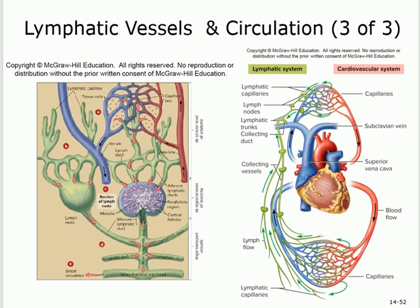The lymph flows from blind-ended pocket-shaped capillaries, through larger lymphatics, filtered by lymph nodes along the way — removing toxins, foreign bodies, pathogens, and debris — until returning to the venous system via the thoracic duct and right lymphatic duct draining into the subclavian veins.